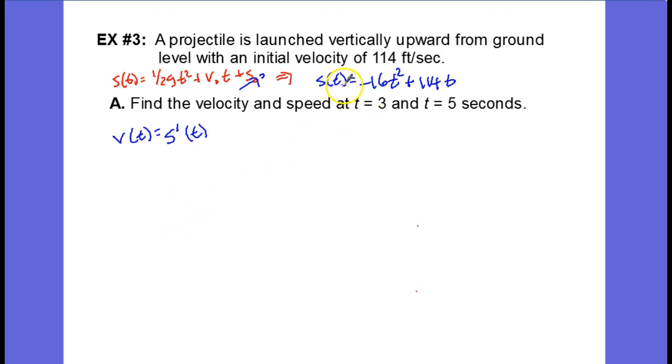What we can do is take this derivative, and so we have 2 times negative 16 equals negative 32 times t, applying the power rule, plus 114.